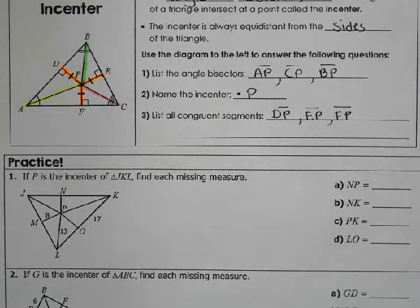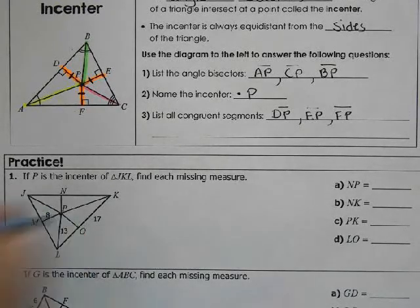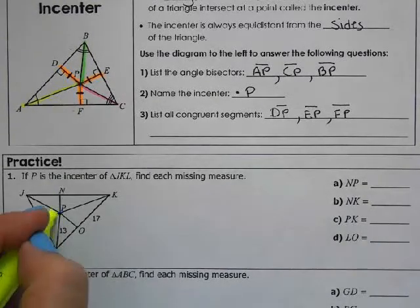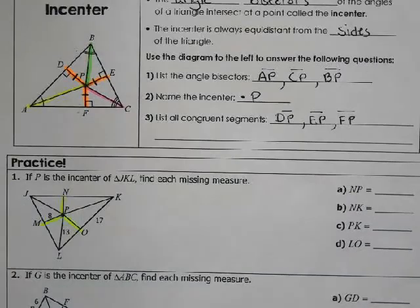So let's try a couple problems. So if P is the incenter, we know that it's equidistant from the sides. So from here we go to the side, not a vertex. So you go perpendicular to the side.